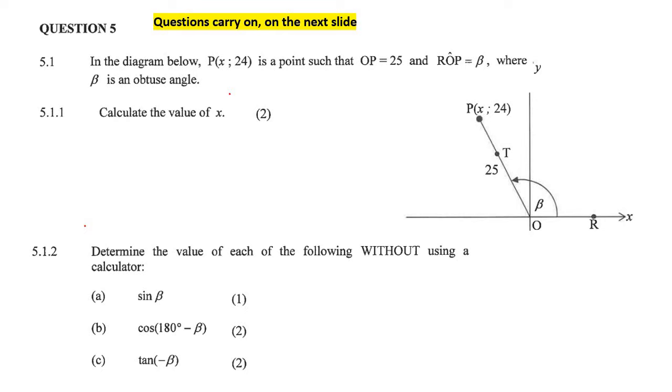In the diagram below, P, that is a point such that OP is 25, where β is an obtuse angle, calculate the value of x.